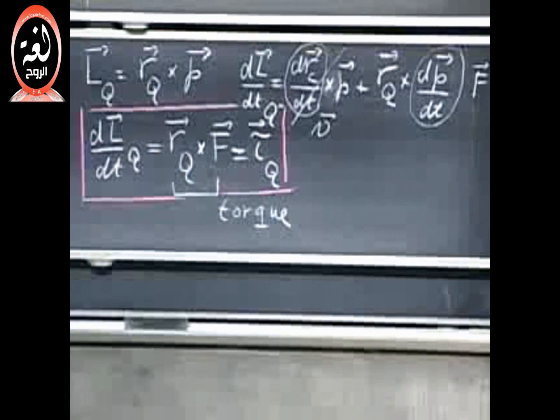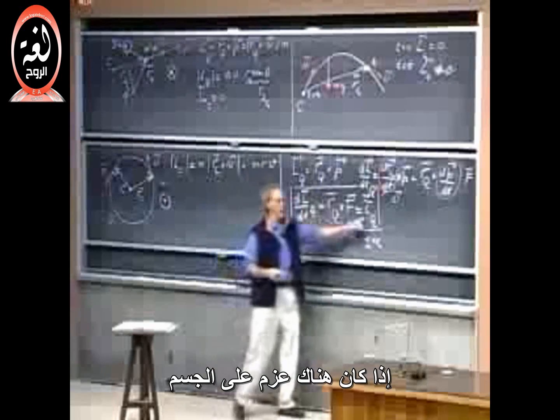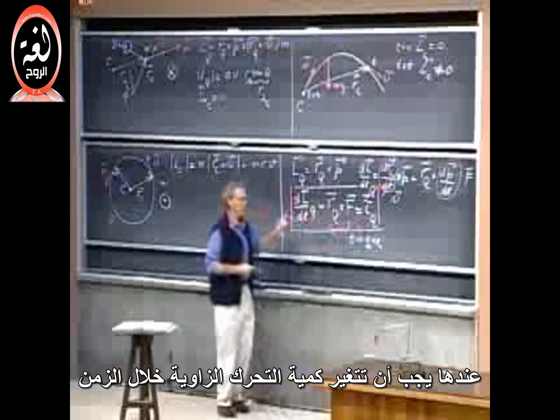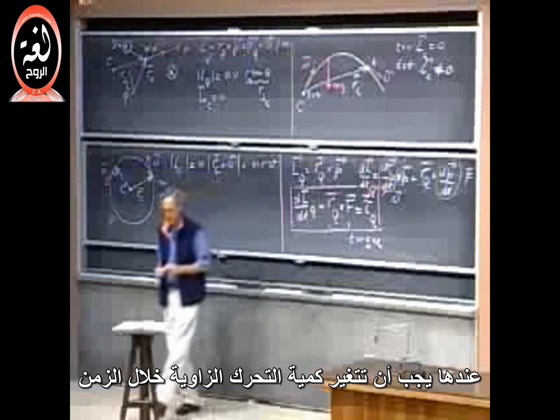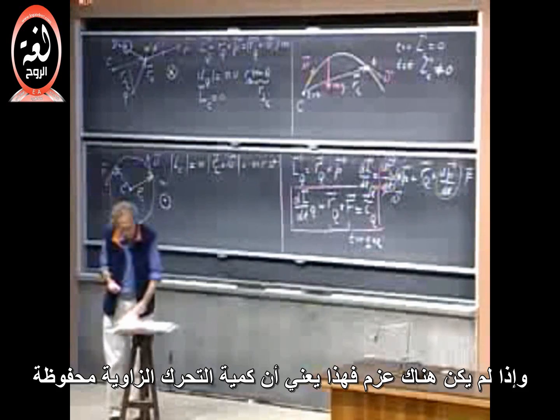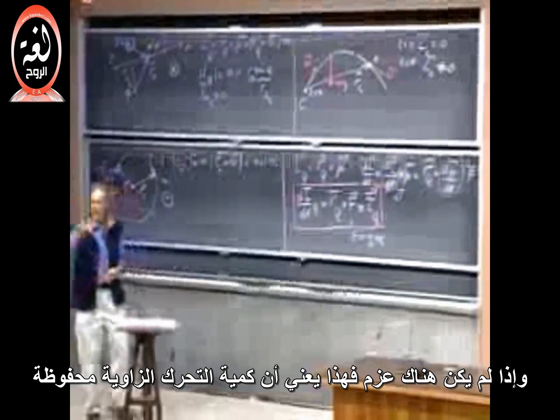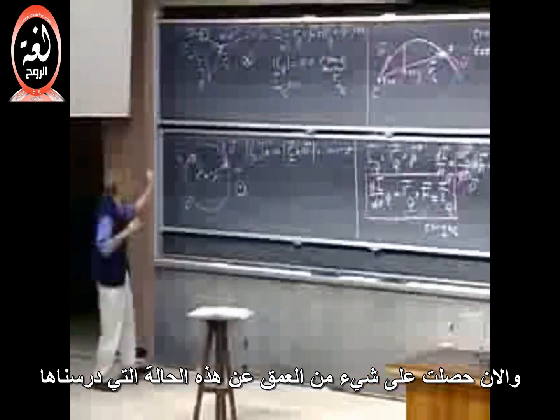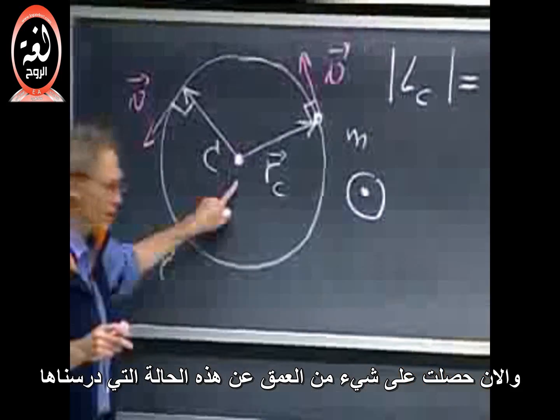What this is telling you is that if there is a torque on an object, the angular momentum must be changing in time. If there is no torque on the object, angular momentum will be conserved. And now you get some insight into this situation that we just discussed.